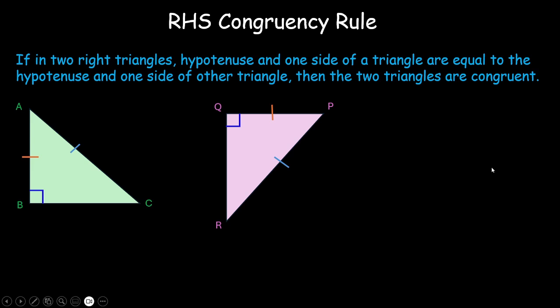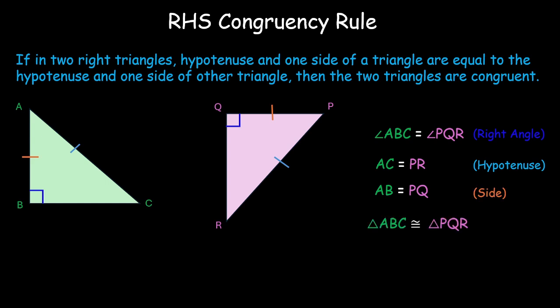We have three things over here. Angle ABC is equal to PQR, that is the right angle. The two hypotenuses, they are equal. AC is equal to PR and any other side, AB is equal to PQ. If these three conditions are met, then it says that the triangles are congruent and we call it the RHS rule.